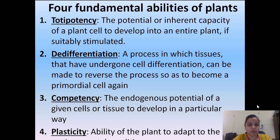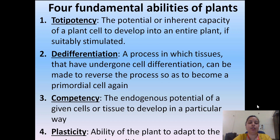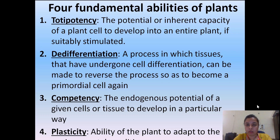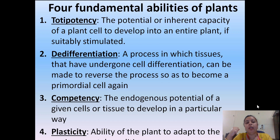The first one is totipotency. Totipotency can be defined as the potential or inherent capacity of a plant cell to develop into an entire plant if suitably stimulated. It means a plant cell can be exploited to generate a whole plant if given proper nutrient medium or hormones. That potential of the plant cell is called totipotency.